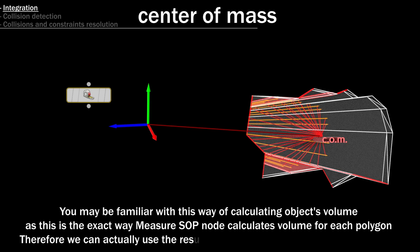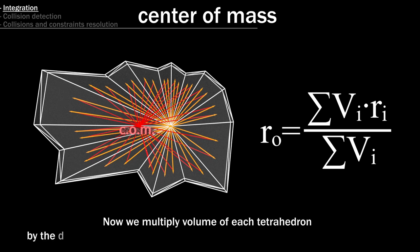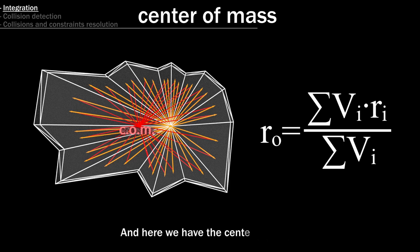Therefore we can actually use the result of measure SOP to ease our calculations. Now we multiply volume of each tetrahedron by the distance to its center of mass, accumulate it and divide by total volume. And here we have the center of mass.